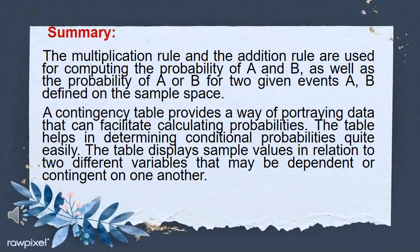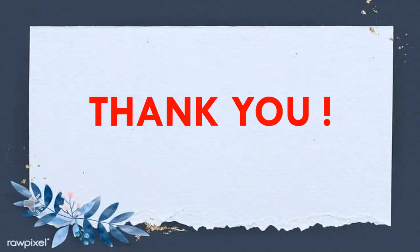To sum up, the multiplication rule and the addition rule are used for computing the probability of A and B, as well as the probability of A or B, for two given events A and B defined on the sample space. A contingency table provides a way of portraying data that facilitates calculating probabilities, helps in determining conditional probabilities, and displays sample values in relation to two different variables that may be dependent or contingent on one another.